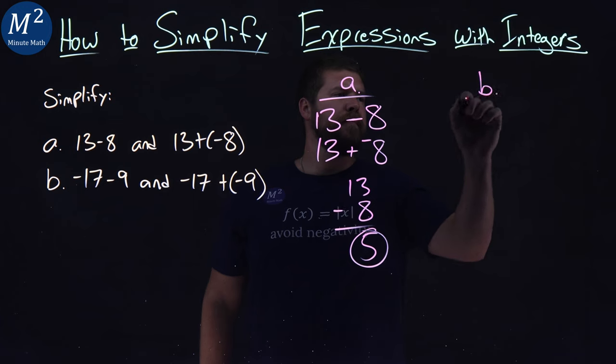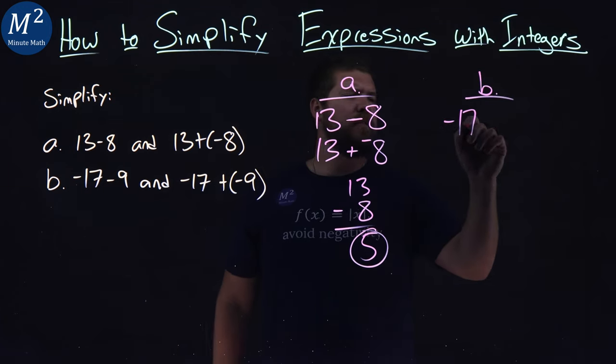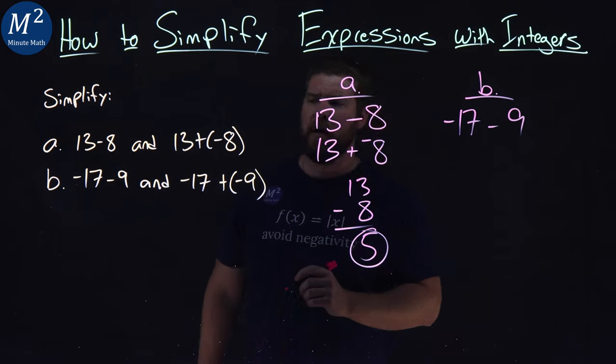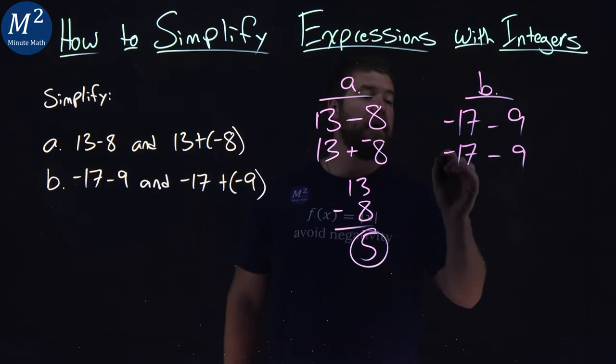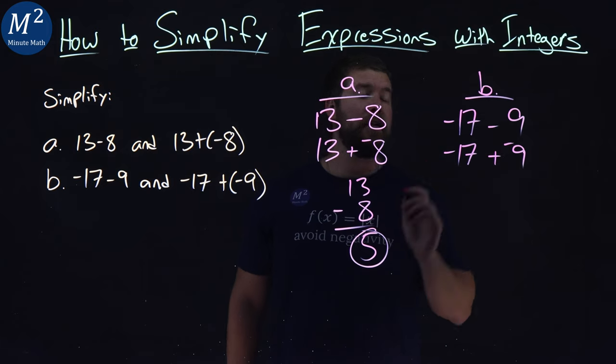Now, part B, a little more difficult. Negative 17 minus 9. Same principle applies. Negative 17 minus 9. Negative 17 plus negative 9.